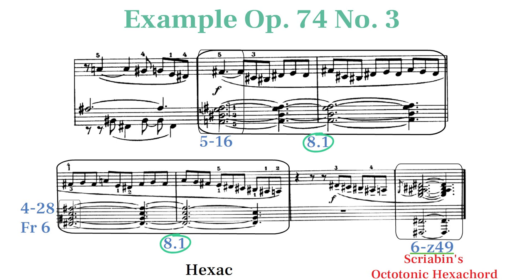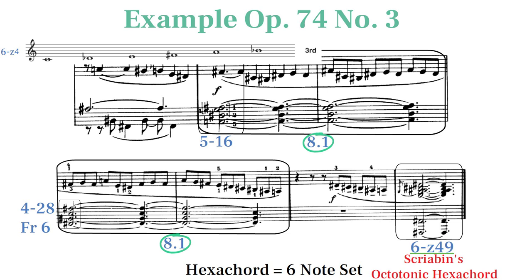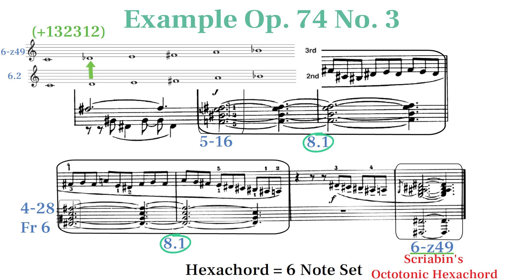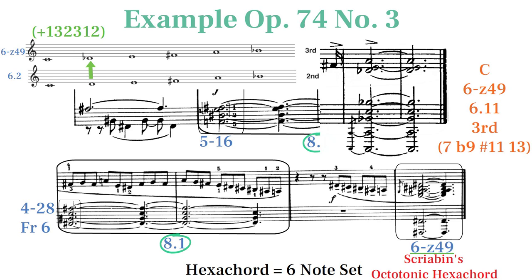Hexachord is just a fancy way of saying six-note set, and Scriabin tends to use its third mode. This scale is just like the most commonly used mode of the mystic chord with a lowered second scale degree. Here's the chord conveniently based on C used at the end of Op. 59, No. 2.